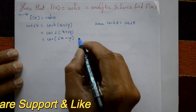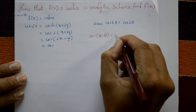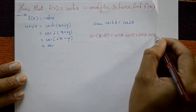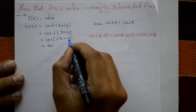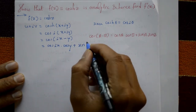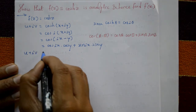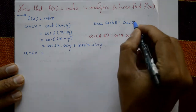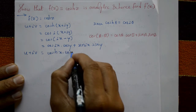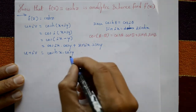Using the cos(a - b) formula: cos(a - b) = cos(a)cos(b) + sin(a)sin(b), where a = ix and b = y. This gives cos(ix)·cos(y) + sin(ix)·sin(y). Now, cos(ix) = cosh(x) and sin(ix) = i·sinh(x).